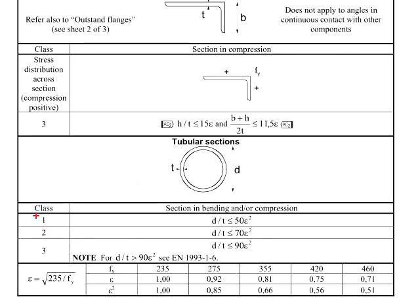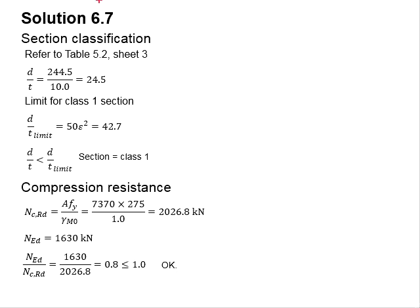The limit for class 1 to class 3 are given in functions of epsilon square. Acquire the actual d per t ratio by dividing d by t, you get 24.5.